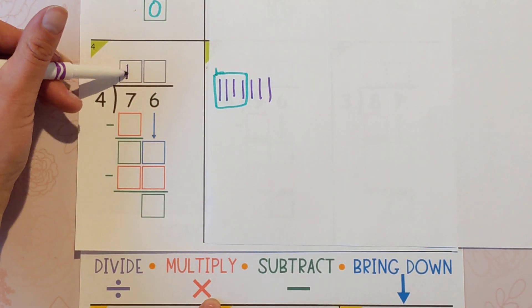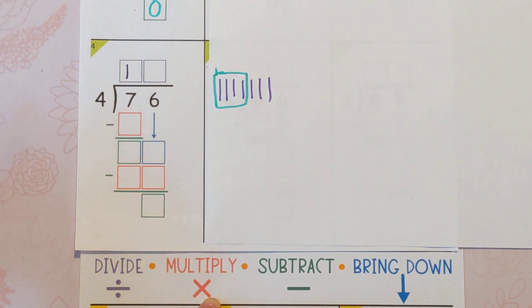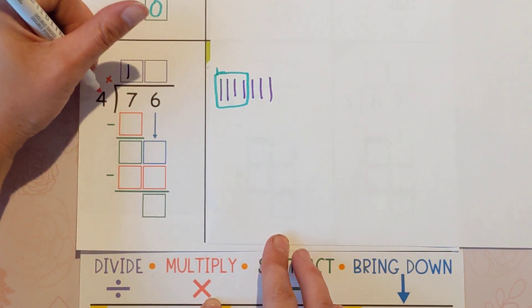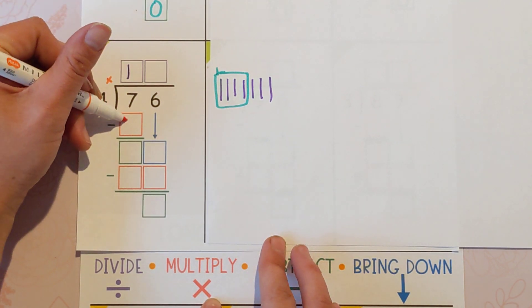So four goes into seven one time. Now we're going to multiply, and we're going to use the last thing we touched, which is this one. And we're going to multiply it back with the four. One times four is four.